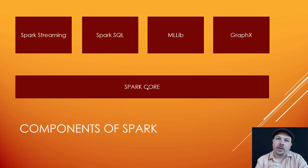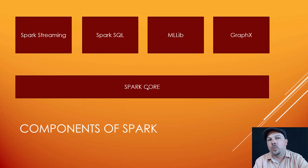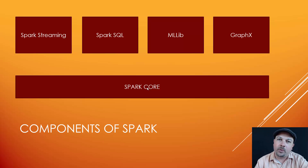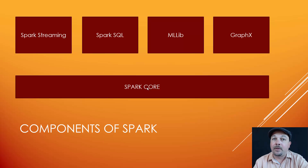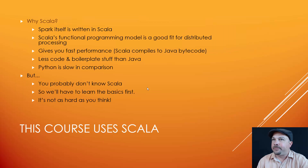GraphX provides a framework for getting information about the attributes and properties of that graph, and also a generalized mechanism called Pregel that we'll look at later in the course, which will let you do pretty much anything you want to that graph in a very efficient and distributed manner. You could throw it at a massive social network data set and wrangle that into whatever information you need. Spark is a very powerful technology.